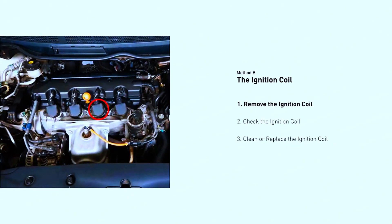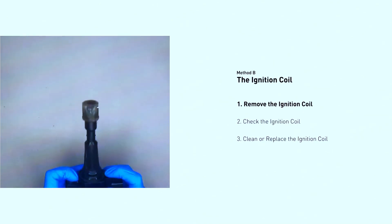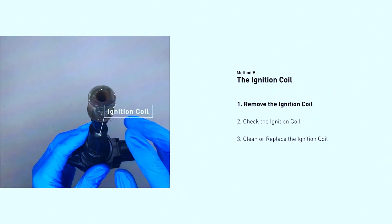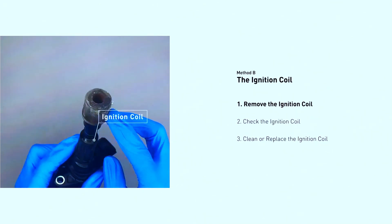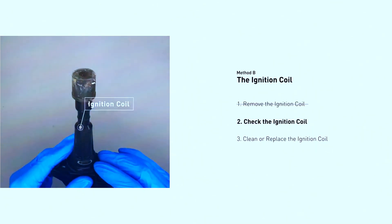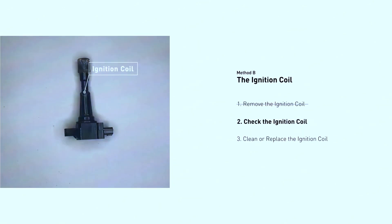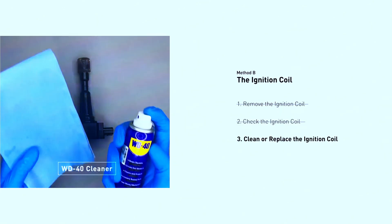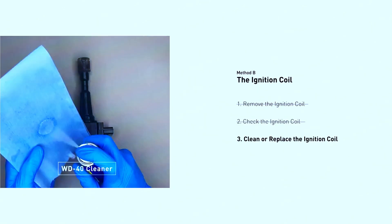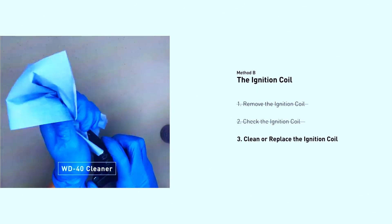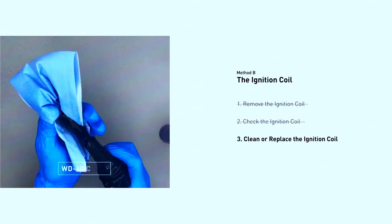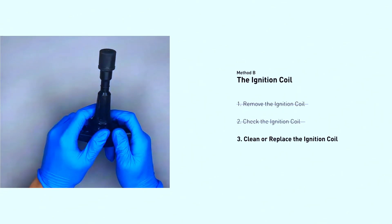Some coils are easy to swap between cylinders. If possible, switch the coil from cylinder 4 to another one. If the misfire code jumps to the new cylinder, the coil is likely bad. Warning: some coils require specialized tools to remove — if you're unsure, consult a mechanic. Clean or replace the faulty coil if needed.